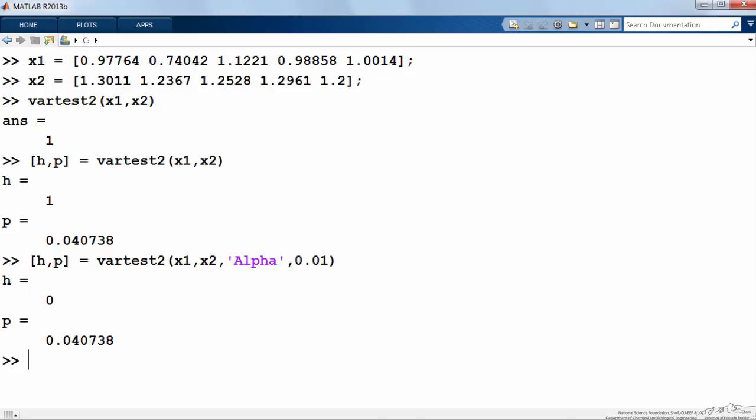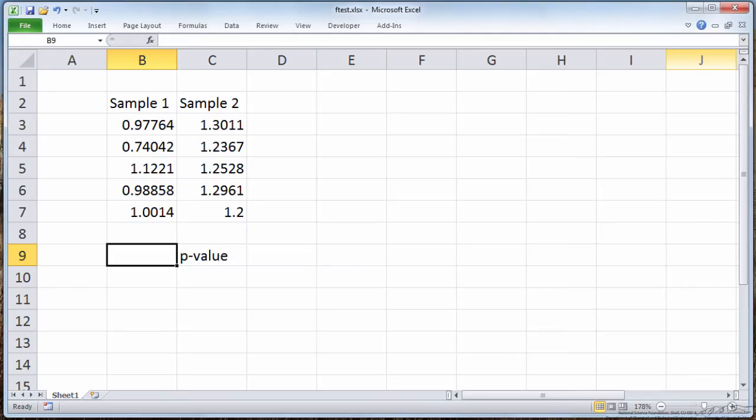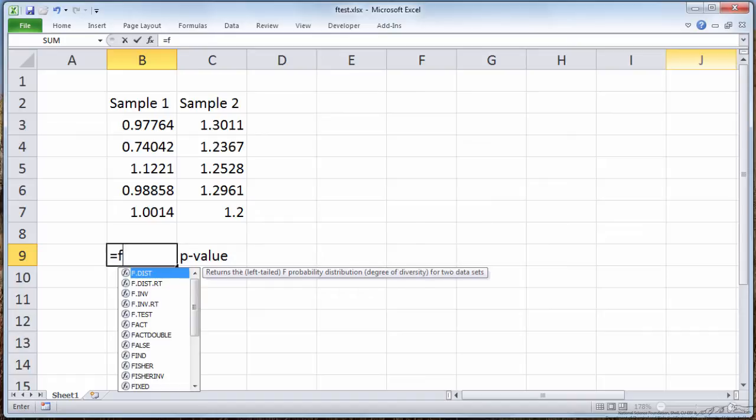So that value of alpha remember is entirely up to you, but typically people will use alpha of 0.05. Here's how I set it up in Excel, I've got my two samples, a sample size of five in both cases. We want to run an f test to get the p value to figure out if the variances are different, so I'll use F.TEST.